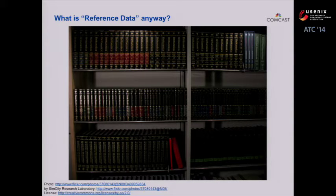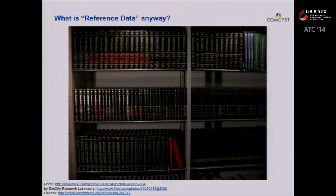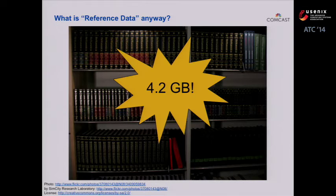A good example is the encyclopedias shown here. Anybody remember actually using the physical ones? Every year you would get the yearbook that would come out at the end, which were the set of updates that had happened since the original encyclopedia was built. That's a good example of the update rate being relatively low with respect to the overall data set. If I condense the Encyclopedia Britannica down to DVDs, this is only 4.2 gigabytes, so it easily fits into main memory.